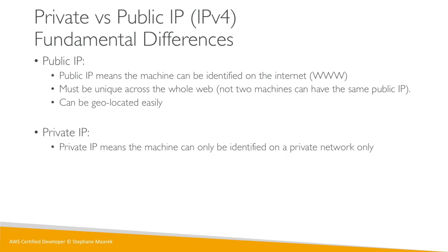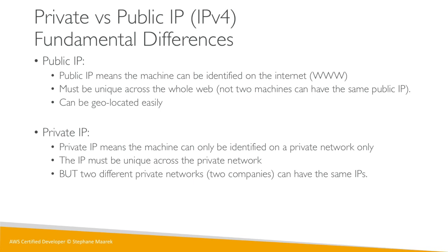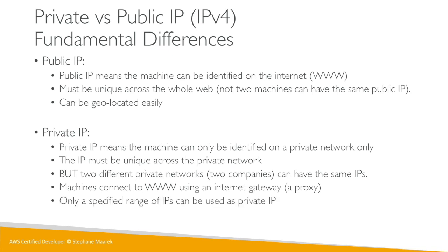With a private IP the machine can only be identified on the private network. The IP must be unique only across that private network, but two different private networks — two different companies — can have the same private IPs, and that's absolutely not a problem. Machines on a private network usually connect to the internet using an internet gateway. Only a specified range of IPs can be used as private IPs.